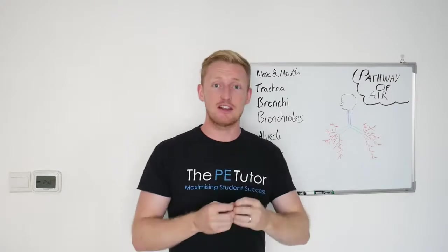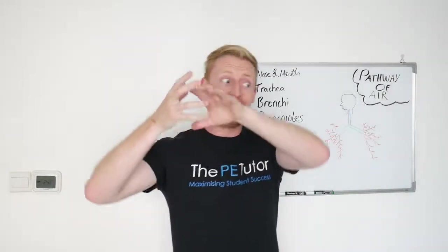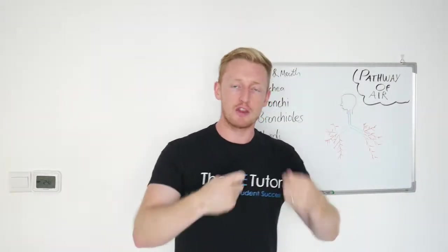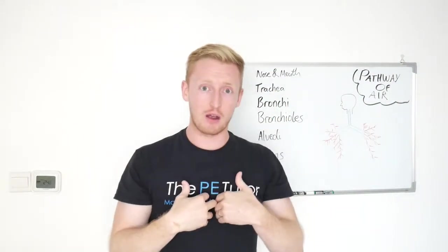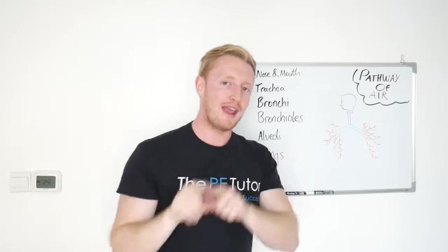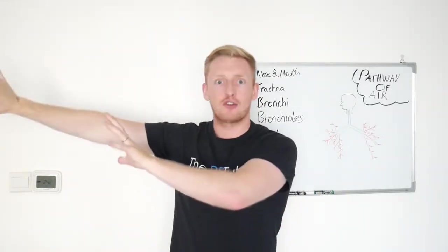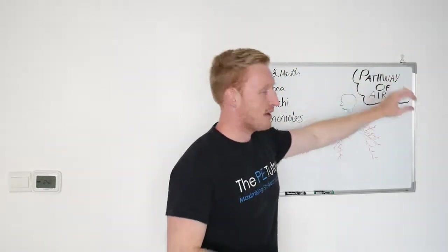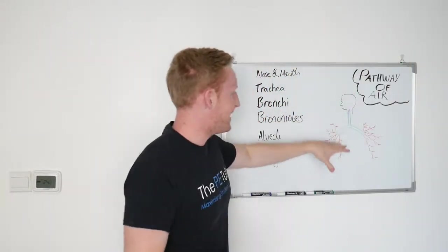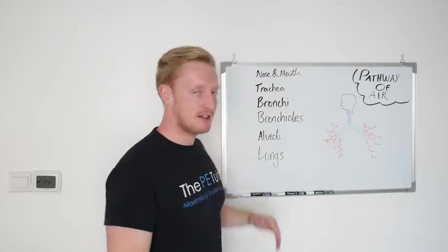We have six different places or locations that air has to pass through during the process of air coming from the environment around us to get inside of our lungs, just before it enters the capillaries and oxygen is taken around the body. But before we get there in another video, we're going to look at the pathway of air from outside into our lungs via these six steps.